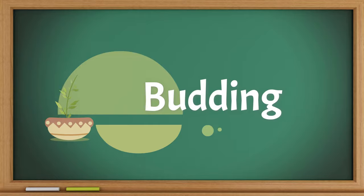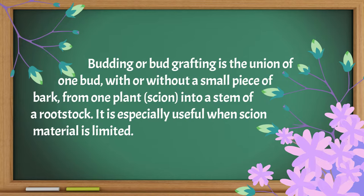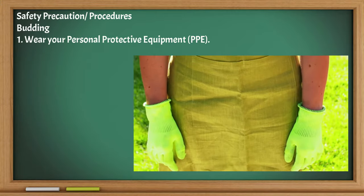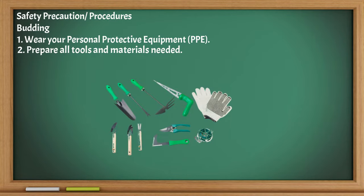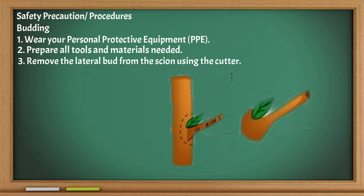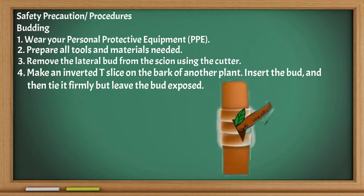Budding. Budding, or bud grafting, is the union of one bud with or without a small piece of bark from one plant or scion into a stem of rootstock. It is especially used when scion material is limited. Wear your PPE before working and prepare all tools and materials needed. Remove the lateral bud from the scion using the cutter. Make an inverted T-slice on the bark of another plant. Insert the bud and tie it firmly, leaving the bud exposed.